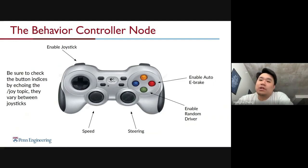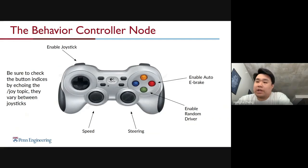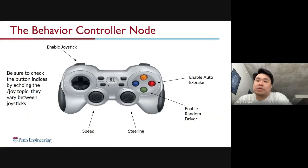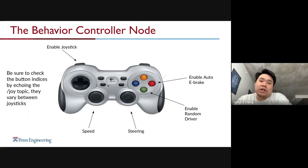You have the LB button — the left shoulder bump button on top — to enable the joystick. Then you have the A and B buttons to enable the random driver and auto e-brake. The two joysticks are for speed and steering. To make sure everything is correctly mapped on your system, you need to check the button indices by echoing the joy topic, as they might vary between joysticks.